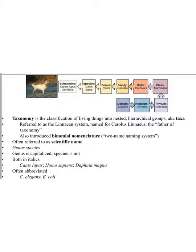There is a very specific way in which we use scientific names. Genus is capitalized, as you see here, and the species name is not. However, both are italicized, so you can see some examples here: Canis lupus, Homo sapiens, Daphnia magna.